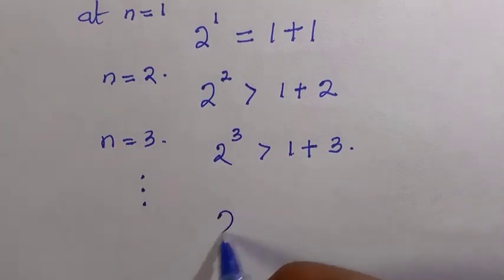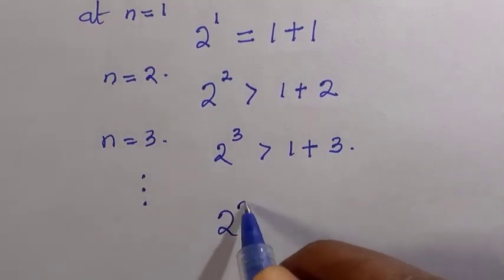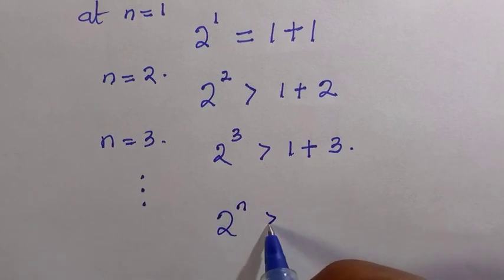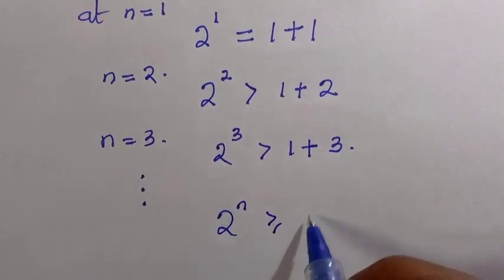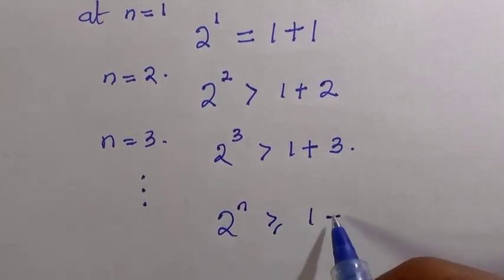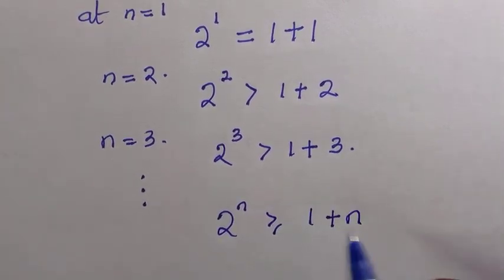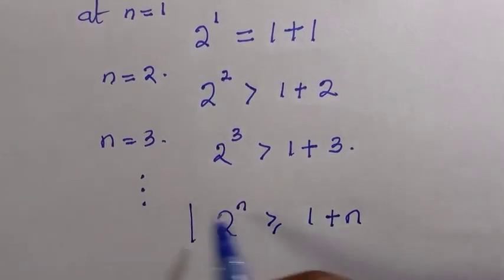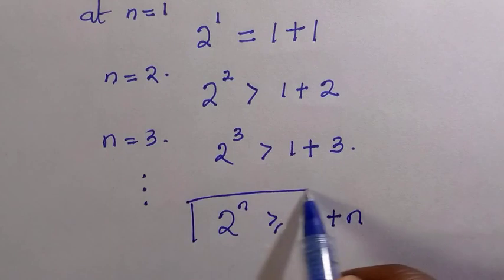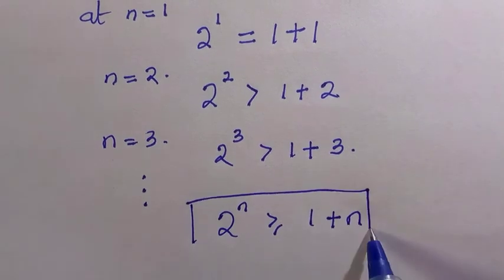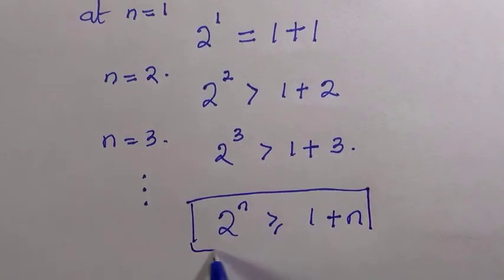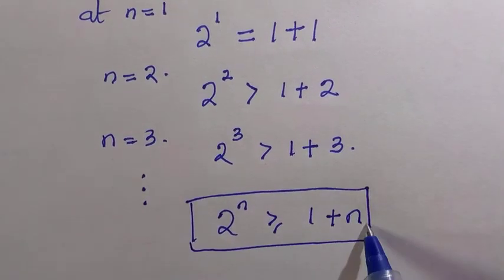So it is only when n equals to 1 that both sides are equal, but for all values beyond 1, 2 raised to power n must always be greater than 1 plus n, which proves the formula.